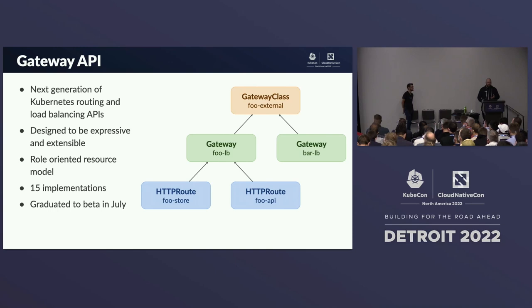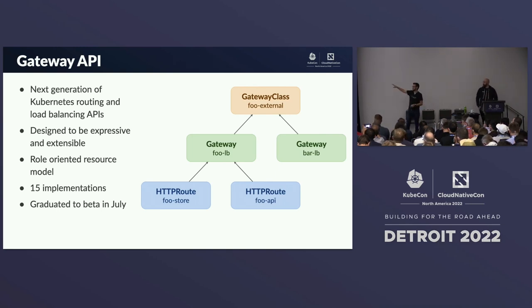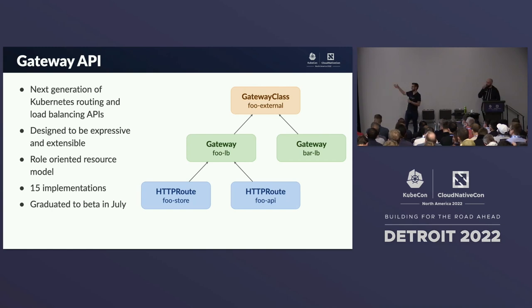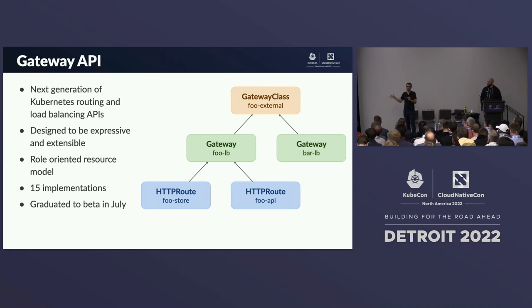Gateway API intends to be the next generation of Kubernetes routing and load balancing APIs. It's designed to be expressive and role-oriented, with 15-plus implementations, and graduated to beta in July. In Gateway API we have three main kinds of resources: GatewayClass, which is similar to IngressClass; HTTPRoute and a bunch of other route types; and Gateway, which is a new concept we'll discuss shortly.